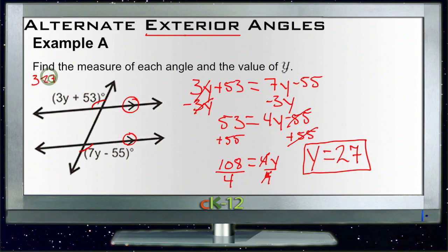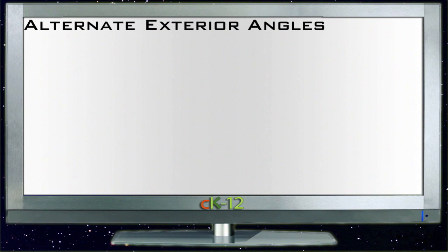And if that one's 134, this one must also be 134 because they're alternate exterior angles. And that's it. Let's take a look at Example B.